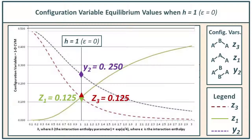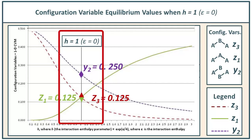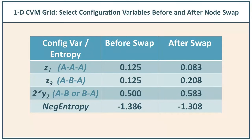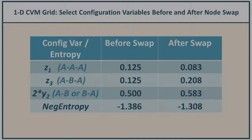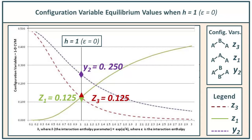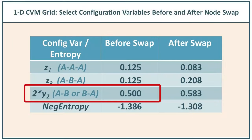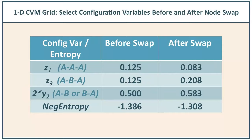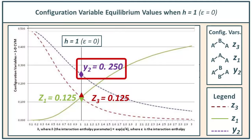Now comes the fun part — the purpose of this entire exercise. Let's check the graph for the case where epsilon 1 equals 0, or h equals 1. This is the equilibrium point when we have no interaction energy between the various nodes. We notice that the values on the graph for h equals 1 correspond exactly to the results we obtained in the first part of our run. Specifically, the values for z1 and z3 are both 0.125 — that's the analytic predicted solution — and the value for 2 times y2 is 0.5, meaning y2 itself is 0.25. We've established a reference point.